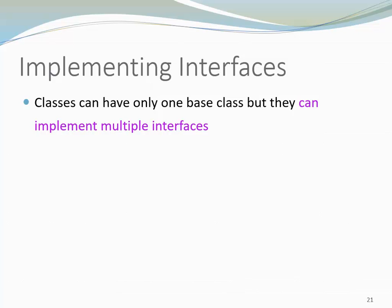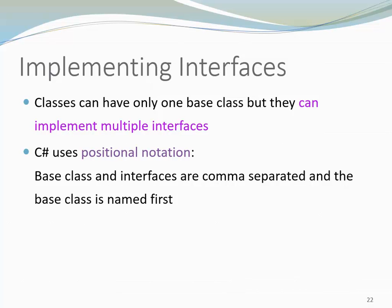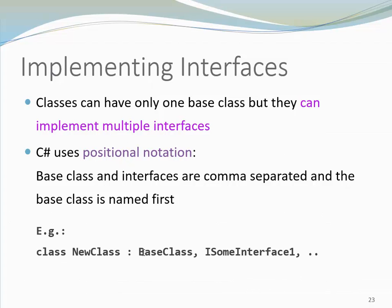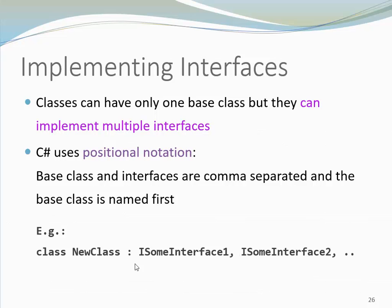Classes can have only one base class, but they can implement multiple interfaces. C# uses positional notation — base class and interfaces are separated by commas, and the base class is listed first. Here are some examples: a class can derive from a base class and an interface, or just from a base class, just from an interface, or from multiple interfaces. You can see how the prefix I on the interface name really helps to see right away what we are implementing and where we are inheriting from.